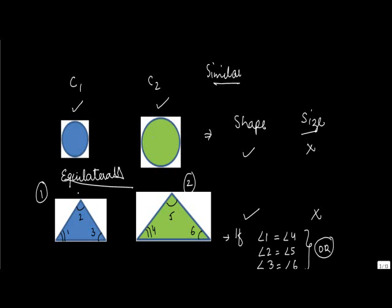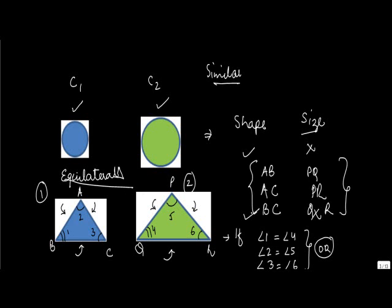Or, the corresponding sides are proportional. If I call one triangle ABC and the other PQR, and the corresponding sides are proportional, that means AB is proportional to PQ, AC is proportional to PR, and BC is proportional to QR — on the assumption that angle one equals angle four, angle two equals angle five, and angle three equals angle six. If these three sides are proportional to each other, then also the triangles can be said to be similar. So the condition is alternative: if three sides are proportional to each other, or if three angles are equal, then in both cases the triangles are similar.